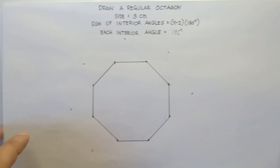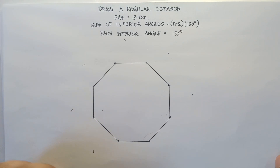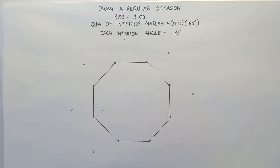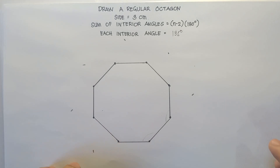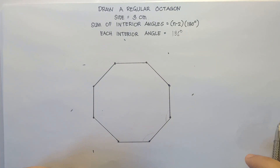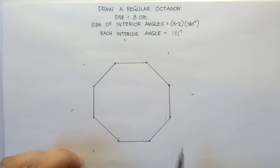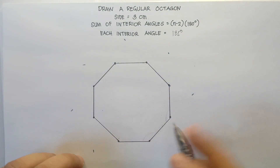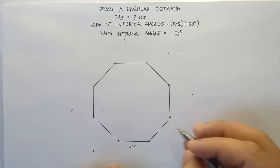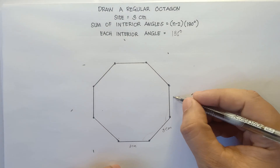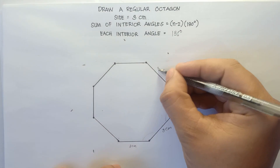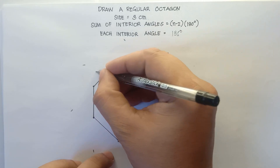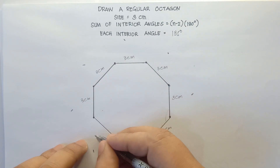That's it, class. All set. That's how you draw a regular octagon. I hope you learned something new today on how to draw a regular octagon. If you like this video, do not forget to like, share, and subscribe. Share it with your friends and classmates so we can help more students. Do not forget to label, because some teachers will ask you to label your sides and interior angles. So this will be 3 centimeters for each side.